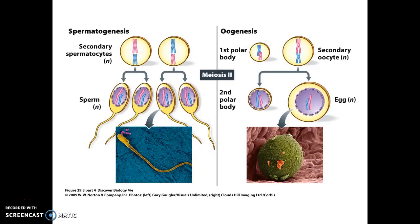These secondary cells then undergo meiosis II. The two secondary spermatocytes result in a total of four sperm cells, each capable of maturing to fertilize an egg. Only the secondary oocyte undergoes meiosis II in oogenesis, and again there is an even division of the genetic material but a very uneven division of the cytoplasm, resulting in a second polar body that plays no further role in development and an enormous egg cell. The egg cell is many thousand times larger than a single sperm cell — in fact, the human egg cell is one of the largest human cells with one of the greatest volumes of cytoplasm of any human cell.